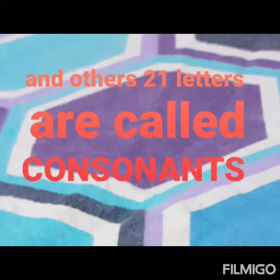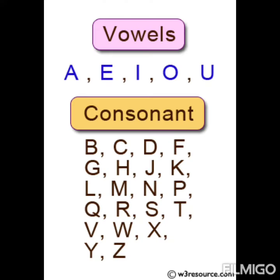And the other 21 letters are called consonants. These are B, C, D, F, G, H, J, K, L, M, N, P, Q, R, S, T, V, W, X, Y, Z.